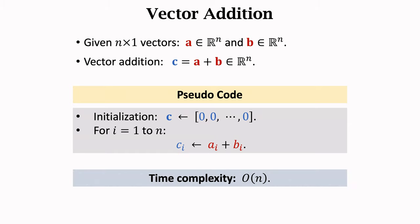The time complexity of vector addition is O(n). The analysis is almost trivial. Each scalar addition has a constant time complexity. So the n scalar additions combined have O(n) time complexity.